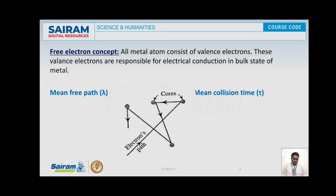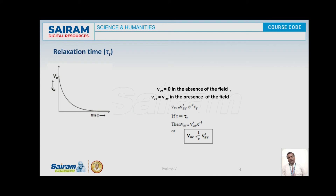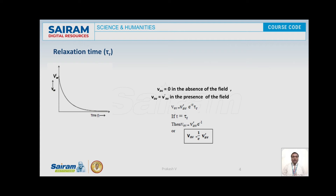Next, I am going to explain what is relaxation time tau r. In the absence of an external electric field, the electrons are moving in all directions. The probability of an electron moving in a definite direction is the same as finding another electron moving in the opposite direction. So the average velocity, let it be Vab, becomes zero for an electron in the absence of an external electric field when considering any particular direction.